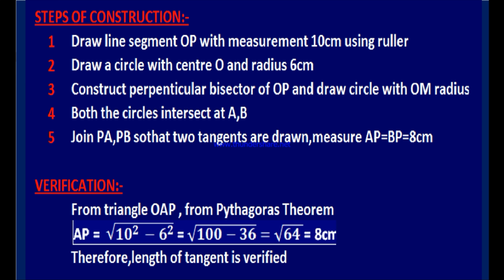Here are the steps of construction. First, draw a line segment OP with measurement 10 cm using ruler. Draw a circle with center O and radius 6 cm. Construct perpendicular bisector of OP and draw a circle with OM as radius. Both the circles intersect at A and B. Join PA and PB so that two tangents are drawn and measure PA which is equal to PB which is equal to 8 cm. After writing the steps of construction, one more part is left — that is verification.